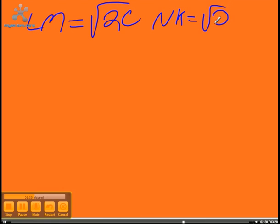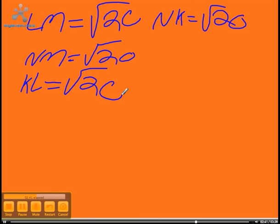So, LM equals radical 20, NK equals radical 20, NM equals radical 20, and KL equals radical 20. And we use the distance formula to find all of those.